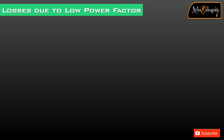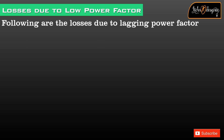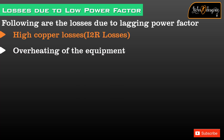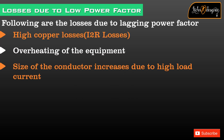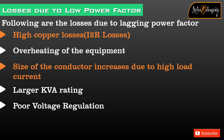Losses due to low power factor: the following are the losses due to lagging power factor — high copper losses (I²R losses), overheating of equipment, increased size of conductors due to high load current, larger kVA rating required, poor voltage regulation, and low active power.